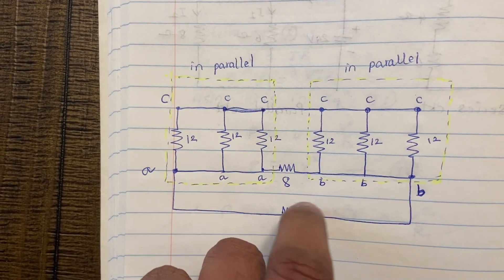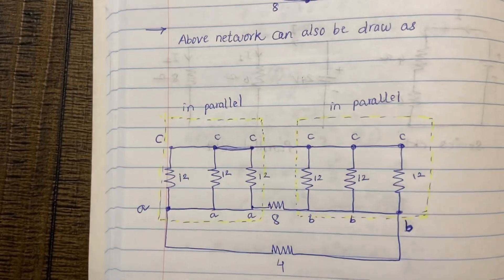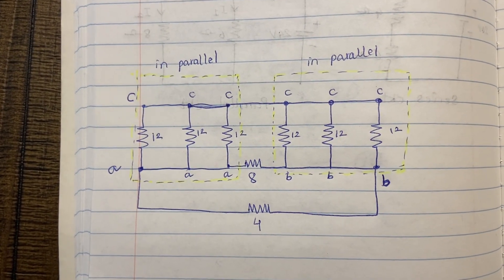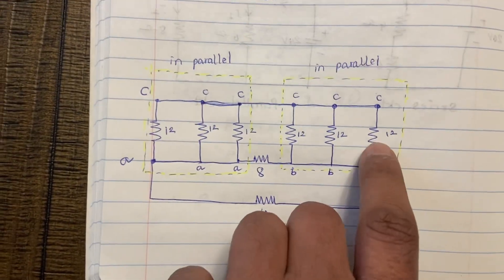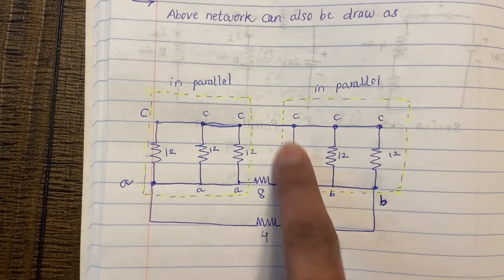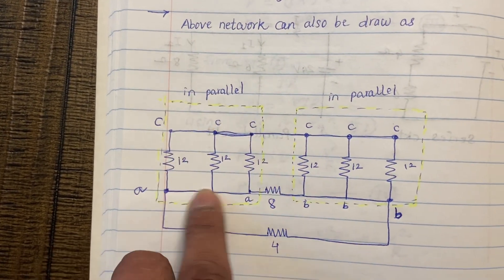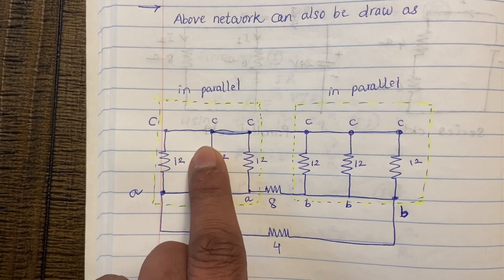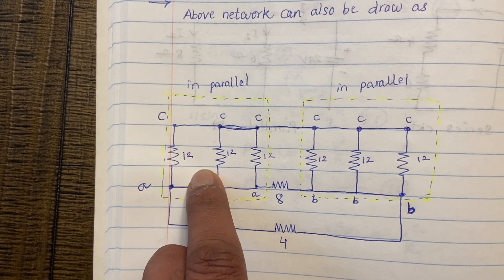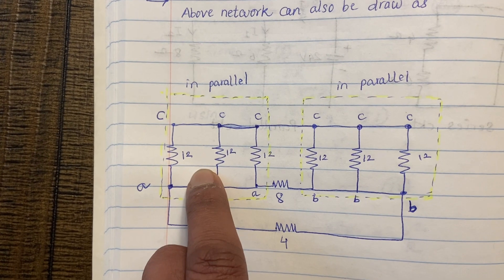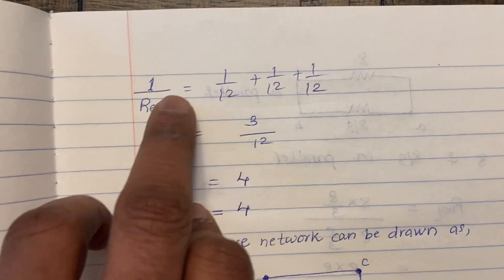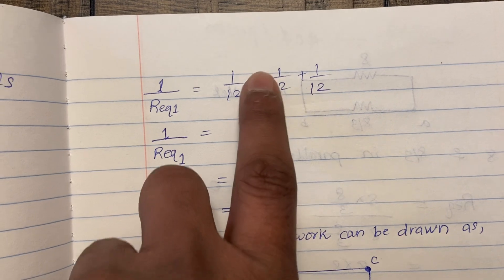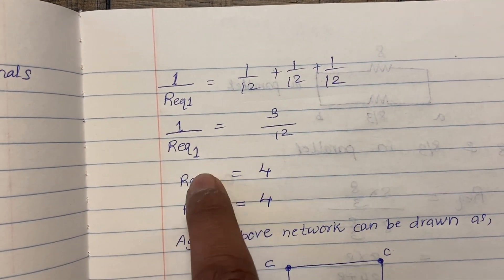Now we need to see which resistances we can reduce using series and parallel formulas. The three 12Ω resistances on the C-to-B side are in parallel, and the three 12Ω resistances on the C-to-A side are also in parallel. For three parallel 12Ω resistors: 1/R_eq = 1/12 + 1/12 + 1/12 = 3/12, so R_eq = 4Ω.